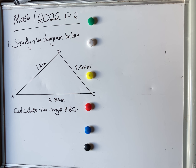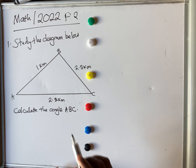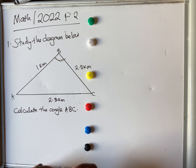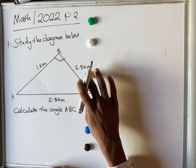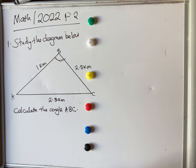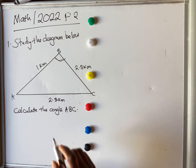Welcome back to my YouTube channel. In this video I want us to solve a question from Mathematics Paper 2 under trigonometry — specifically the 2022 Mathematics Paper 2. We start with the diagram below and the question asks us to calculate angle ABC. When given all three sides, this means you are using the cosine rule.